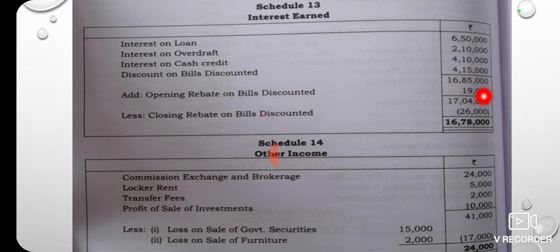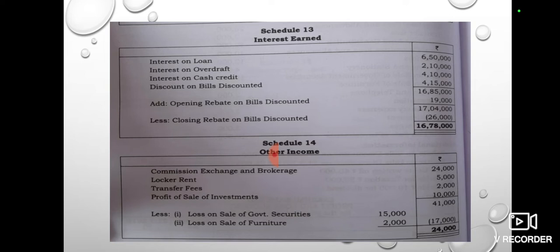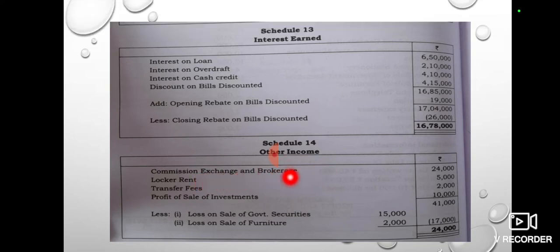To the opening rebate on bills discounted, you add the closing rebate on bills discounted to get $14.78. You can add this to the profit and loss account. Commission, Exchange and Brokerage is $24. Locker Rent is $5. Transfer fee is $2. Profit on Sale of Investment is $10, giving a total of $41.